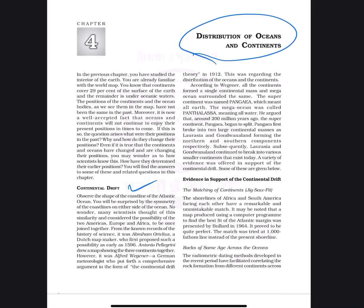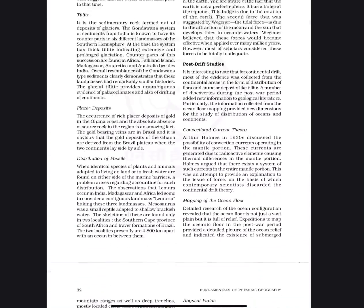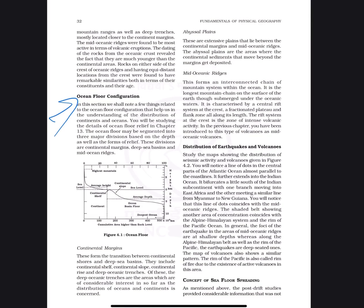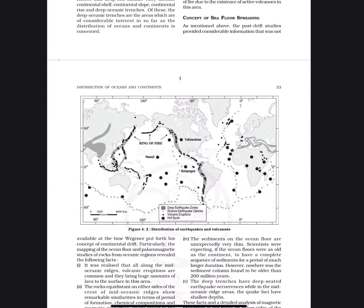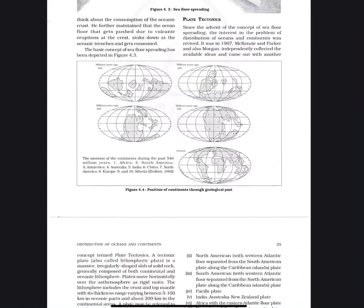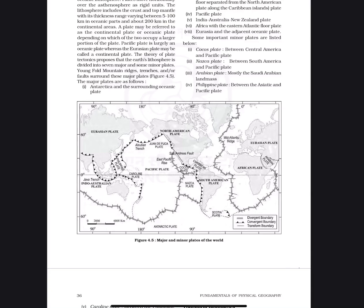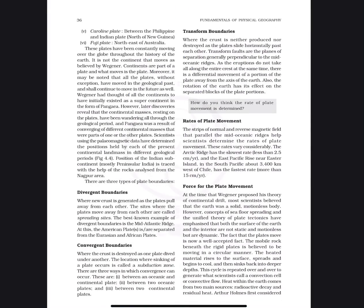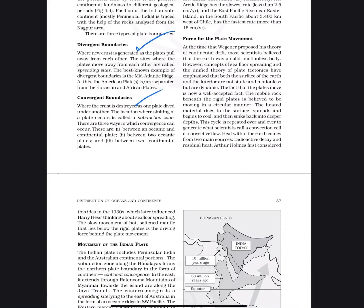Continent Drift Theory has already come up in the CAPF exam. The ocean floor configuration — you should know the continental shelf. Ring of Fire came in a 2017 question — this is a very important topic. In plates, you should know divergent plates and convergent plates, convergent boundaries. There was a mixed question in 2017 on the Ring of Fire and why convergent plate boundaries are related to it. Also cover the movement of the Indian plate.